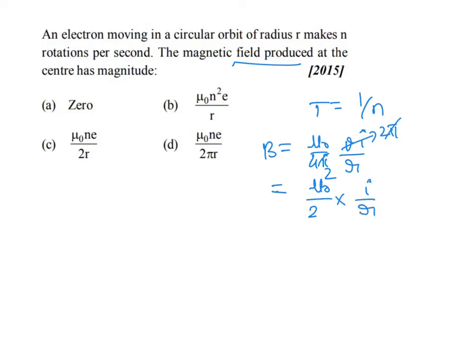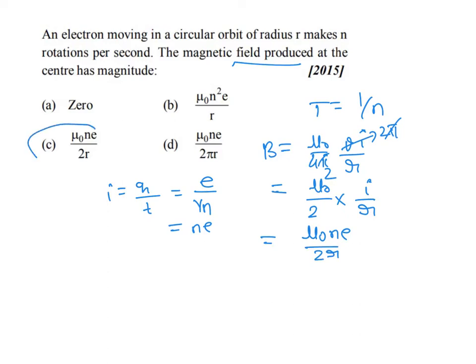Since there is no option containing I directly, we replace I using I = charge/time = e / (1/n) = ne. Therefore B = μ₀·n·e / (2r). Option C is the right answer.